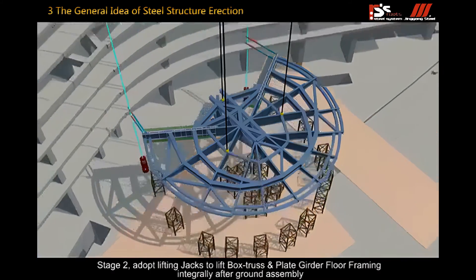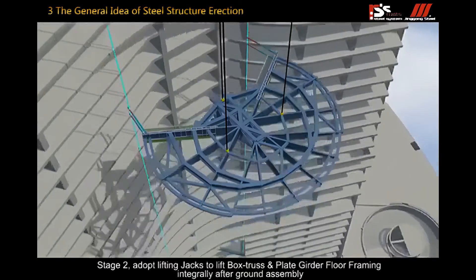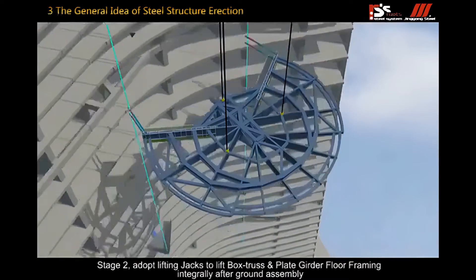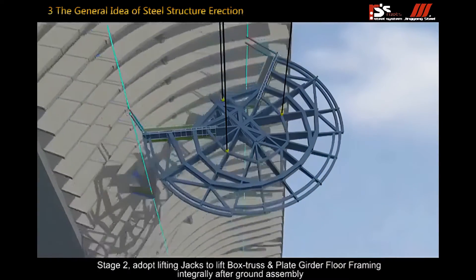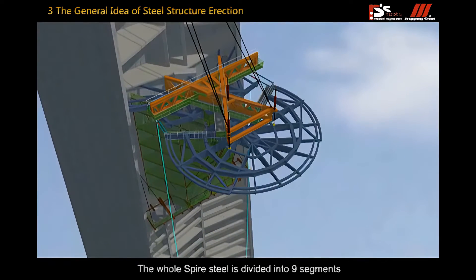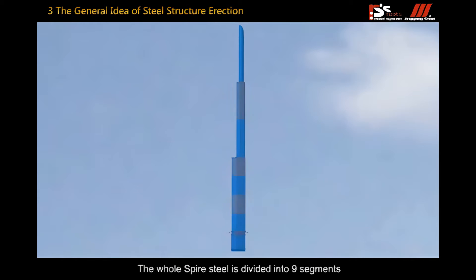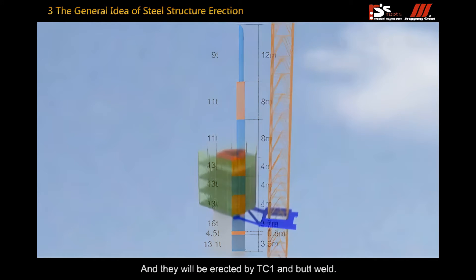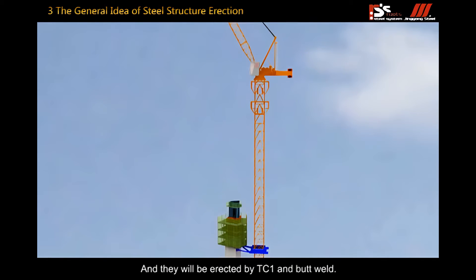Stage two adopted lifting jacks to lift the box truss and plate girder framing integrally after ground assembly. The hoisted spire steel is divided into nine segments and they will be erected by TC1 and butt welded.